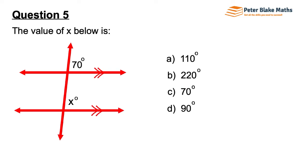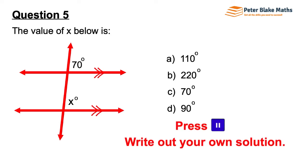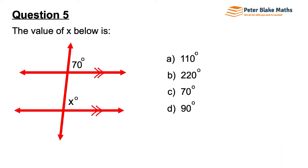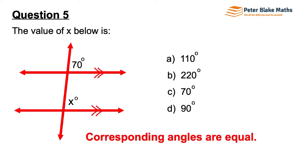Question 5. The value of X in the diagram below is... Corresponding angles are equal. The 70 degrees is an acute angle in the top right-hand corner of the top intersection of the two lines, and the X degrees is in the top right-hand corner of the bottom intersection. So they're in matching, corresponding positions, and corresponding angles are equal. So we can say that X equals 70 degrees.